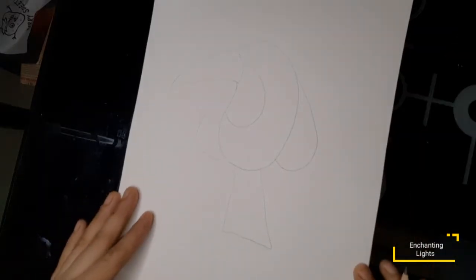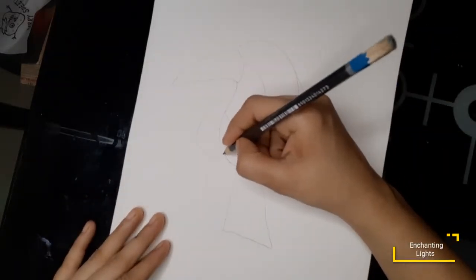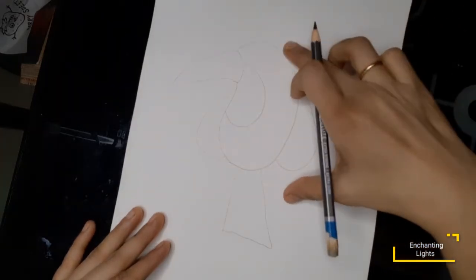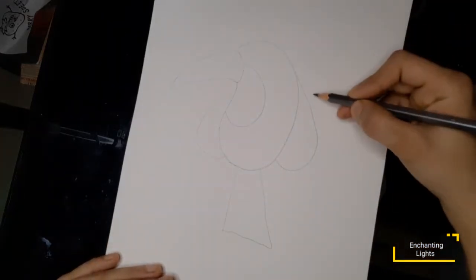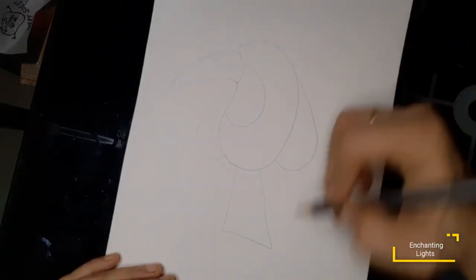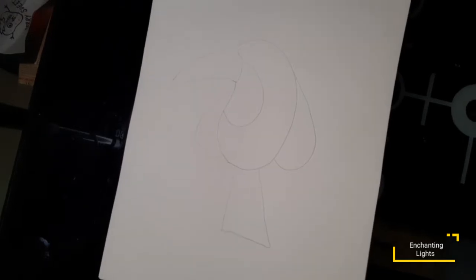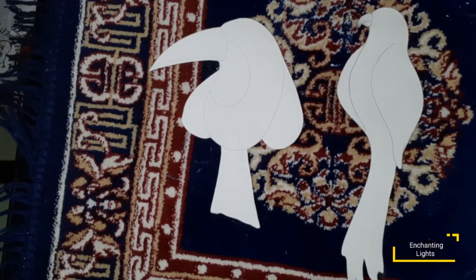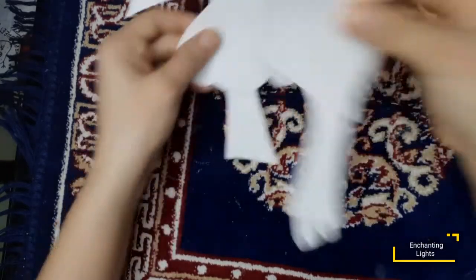So I have finished making the toucan stencil. Now I'll cut it and similarly I'll make one for macaw as well. So guys, my both bird stencils are ready - toucan and macaw both. I'll keep them aside.